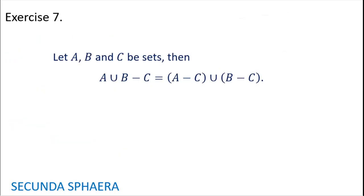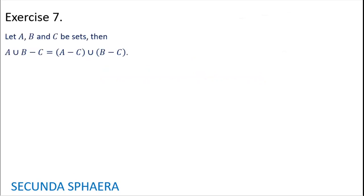Moving on to exercise number 7. Let A, B, and C be sets. Then A union (B without C) is equal to (A without C) union (B without C). If you want to try the exercise on your own, feel free to pause the video. Again, this is an equality of sets, and it is going to be proven by equivalences.